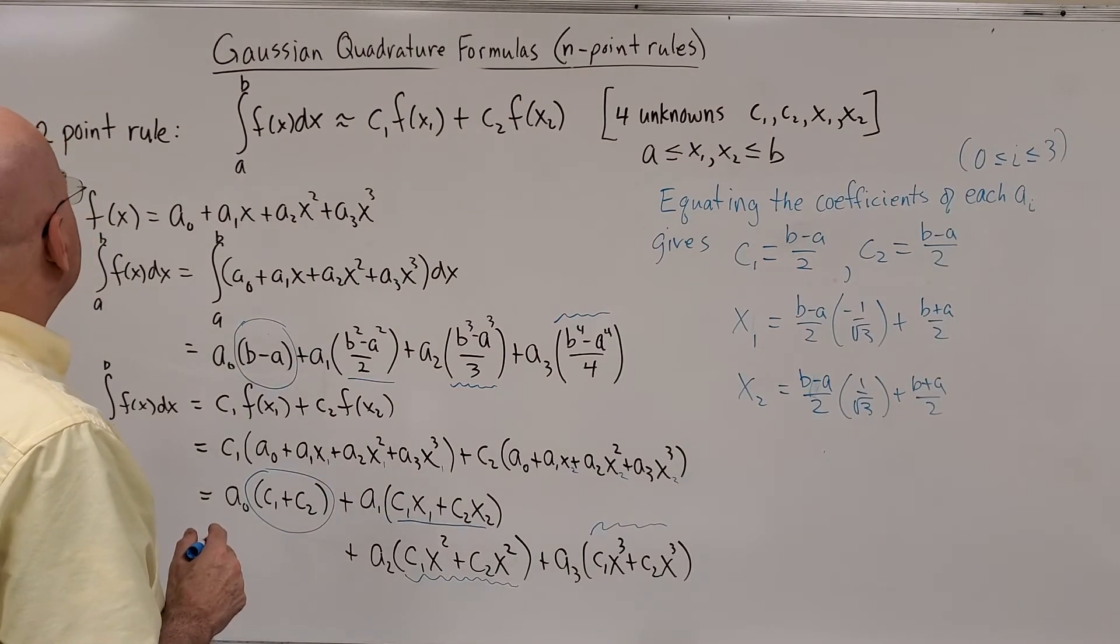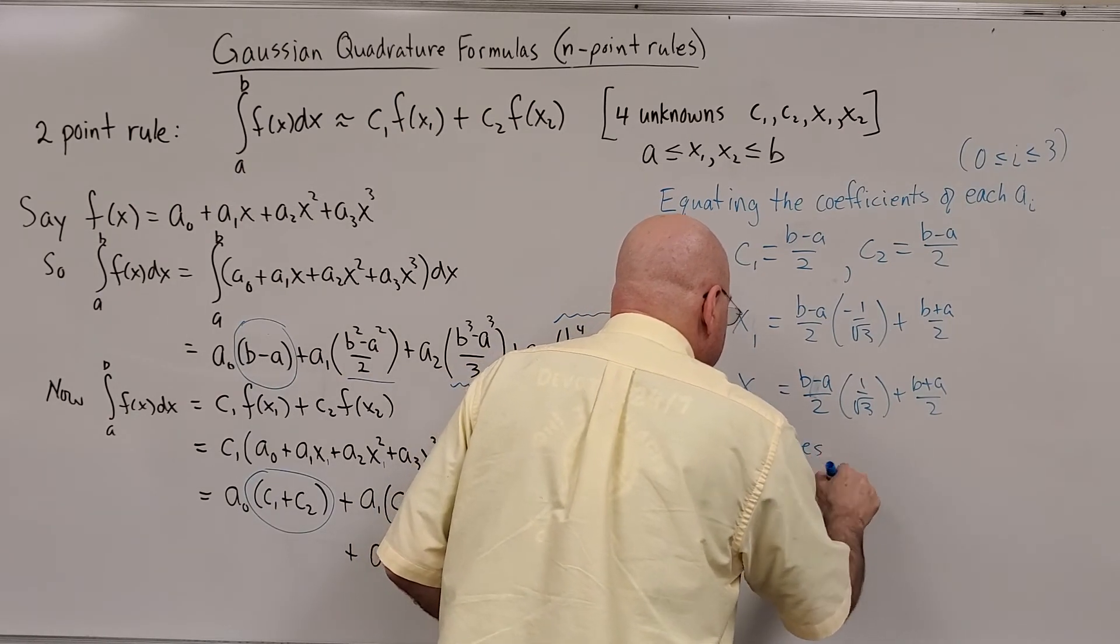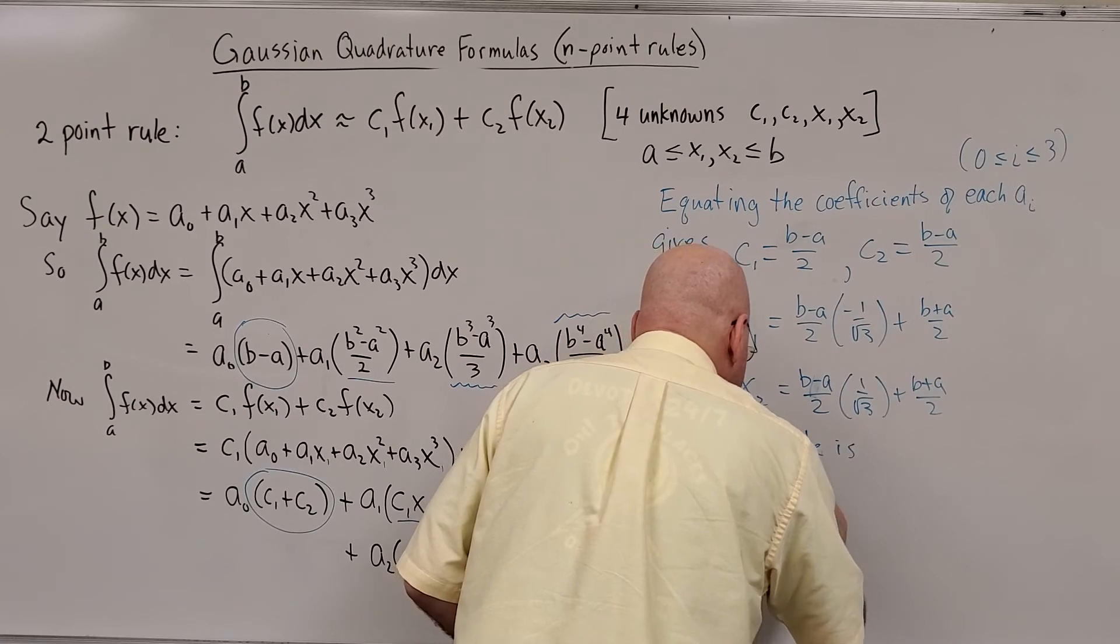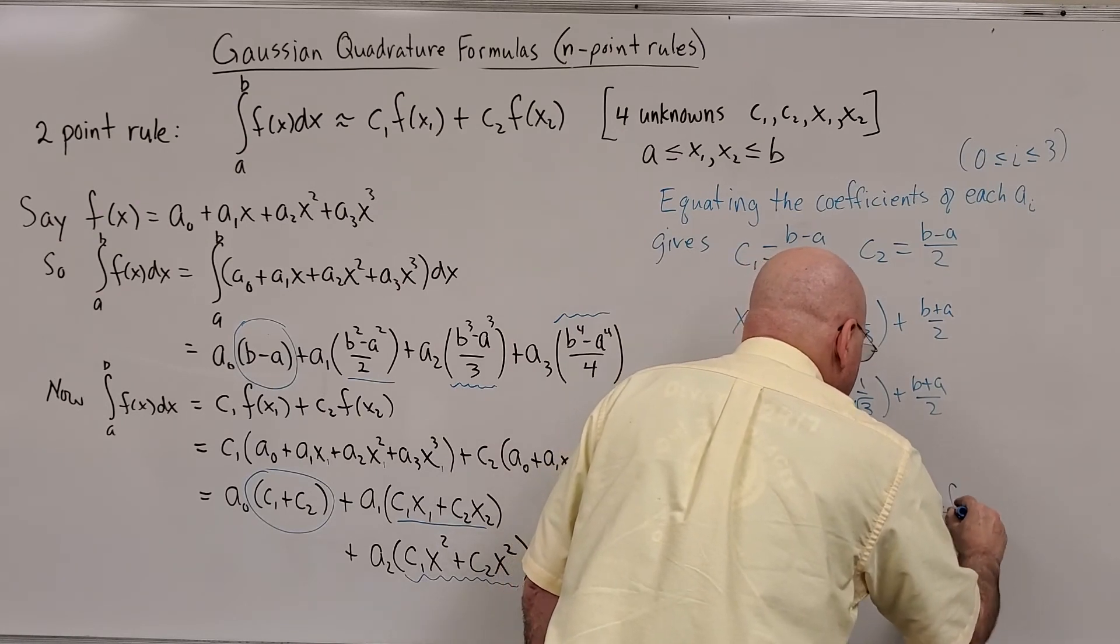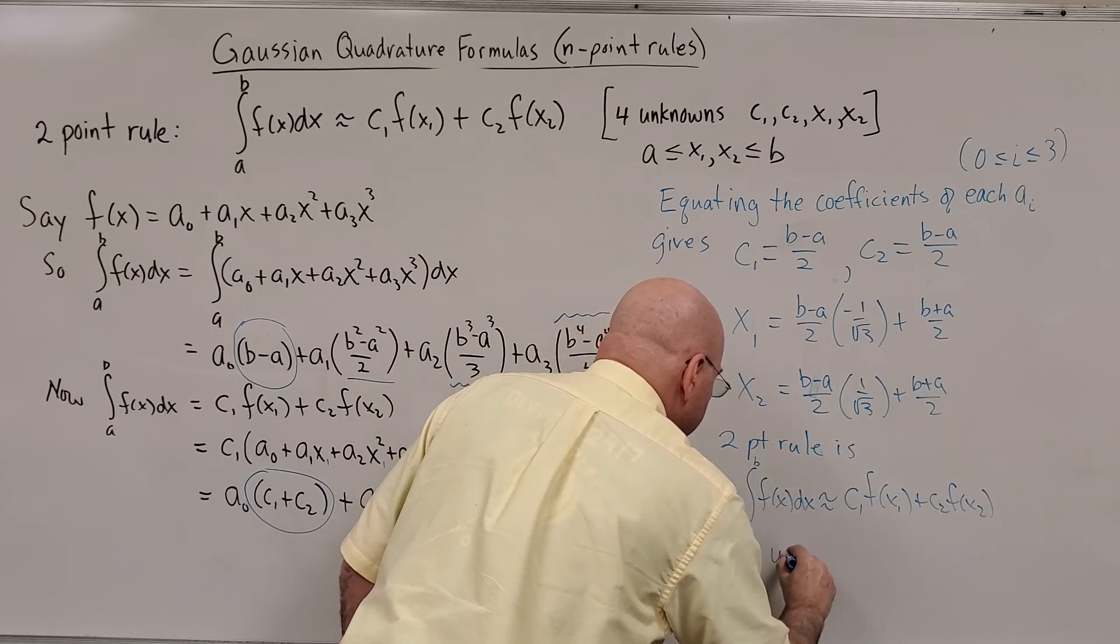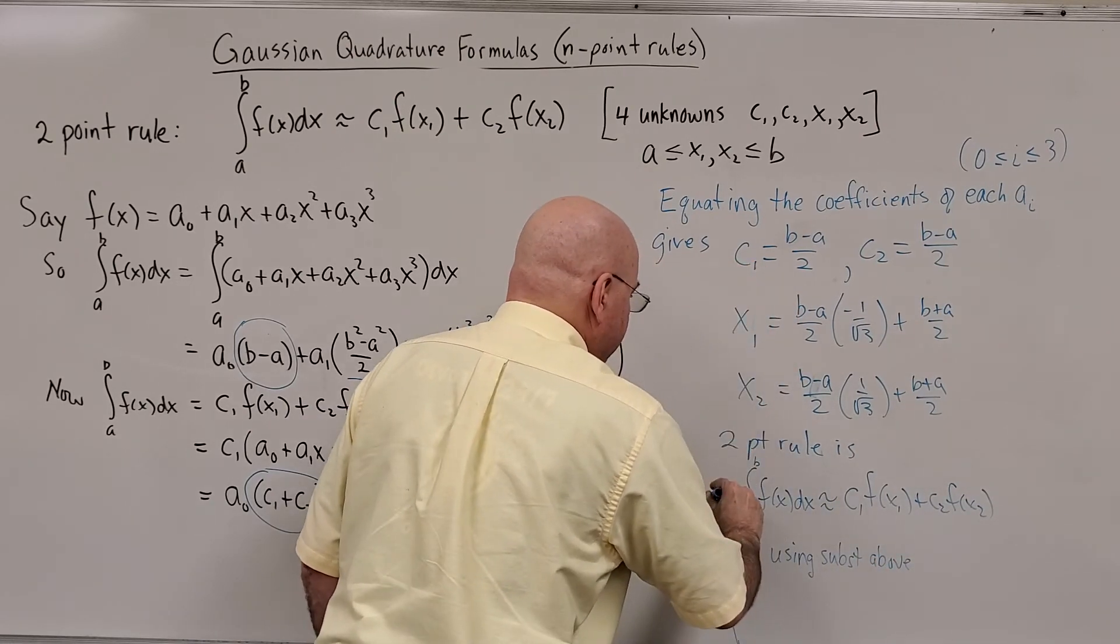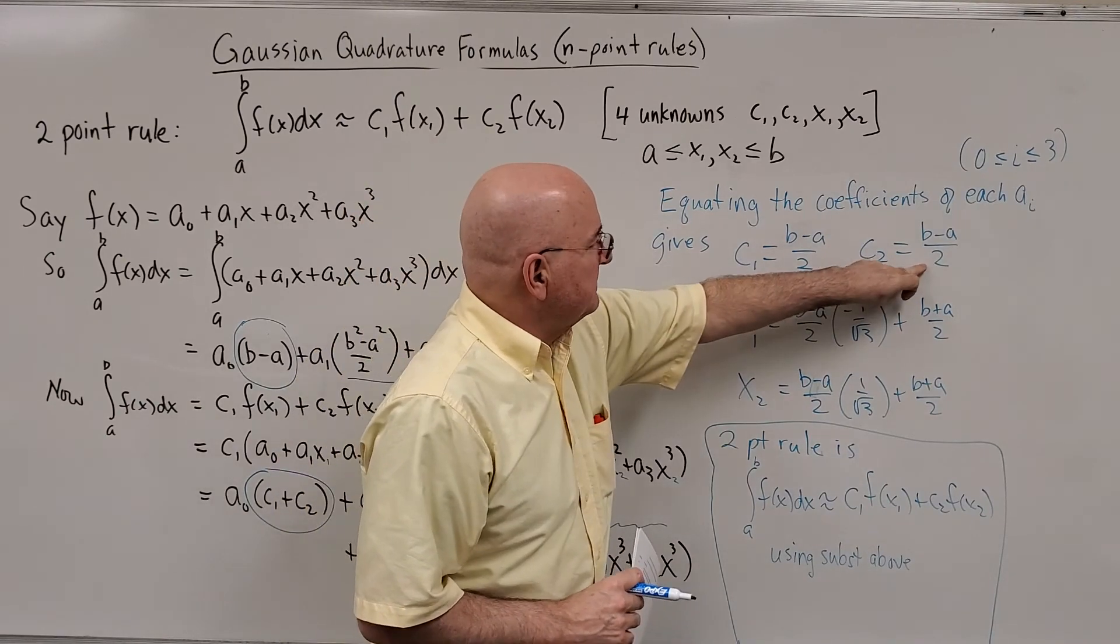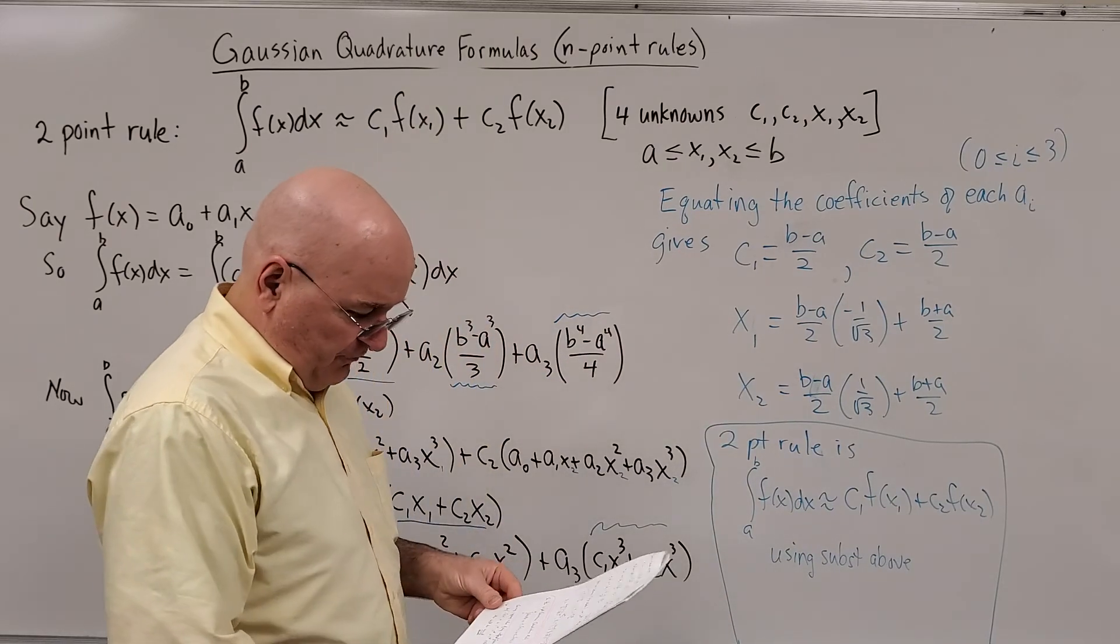So the two-point Gaussian quadrature rule, I'll just call it the two-point rule, is the integral of f of x dx is approximately equal to C1 f of x1 plus C2 f of x2 from A to B, using substitutions above. I'm not going to write out the whole thing. So you'd have to replace C1 and C2 with this and this. And you'd have to replace x1 and x2 with this and this. So it'd look like a pretty complicated formula in that case.